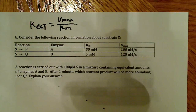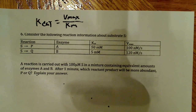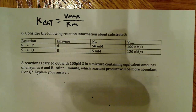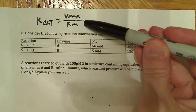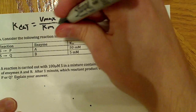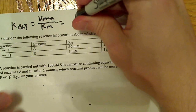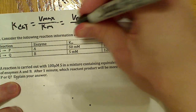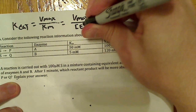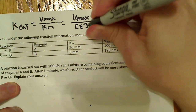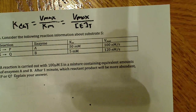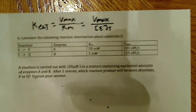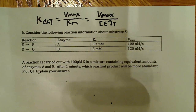This problem is going to exhibit the conditions necessary to make this particular assumption, instead of the normal approach where we would say Vmax over total enzyme concentration. I'm going to show you how you can use this approximation to solve a problem, and under what conditions it might be used in this manner.